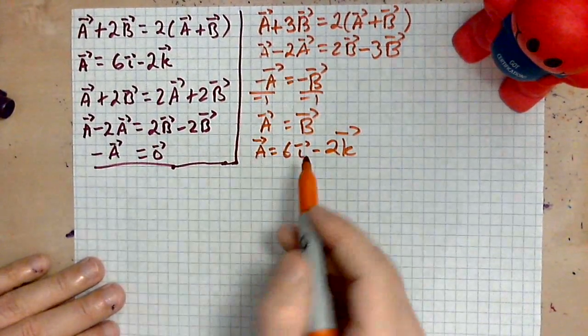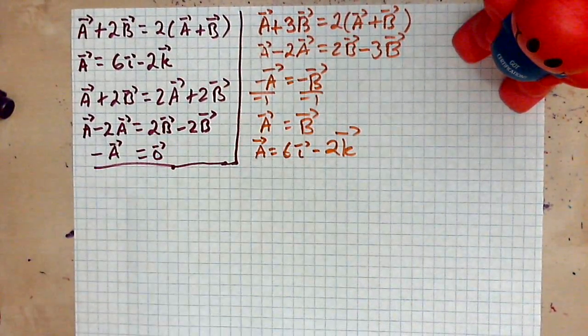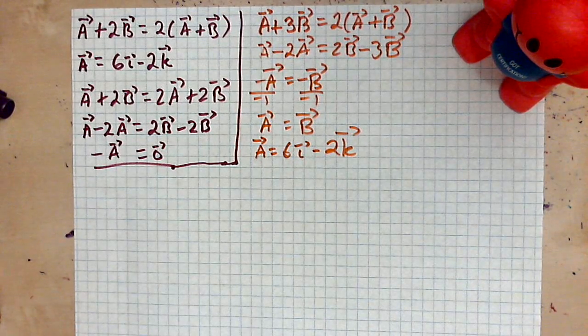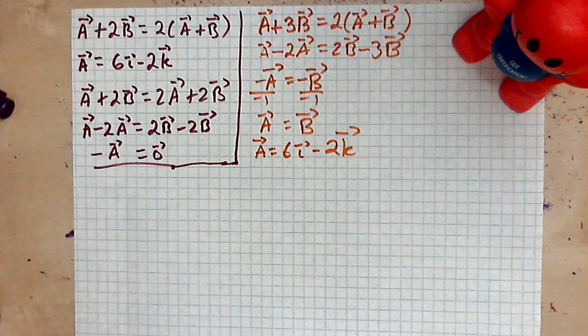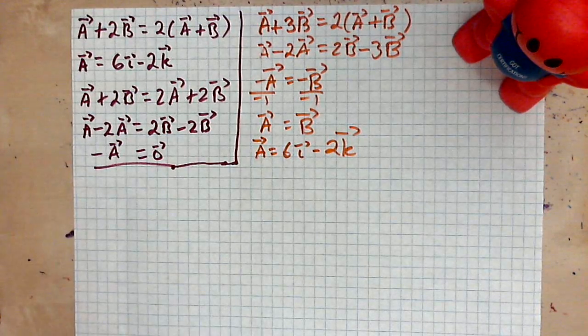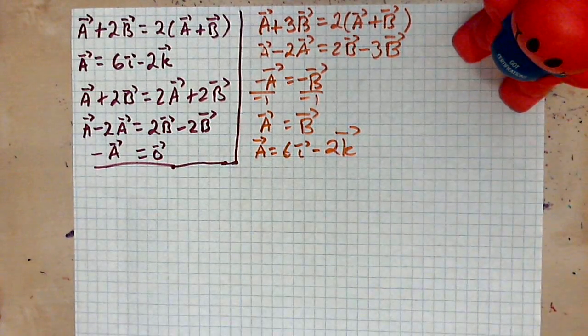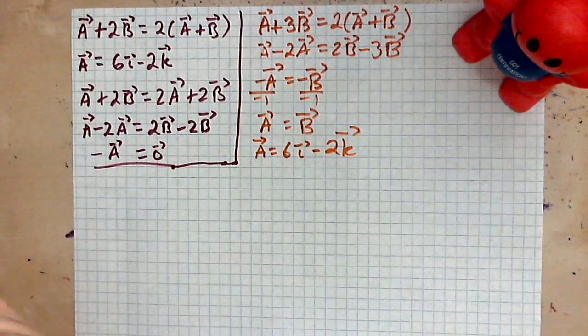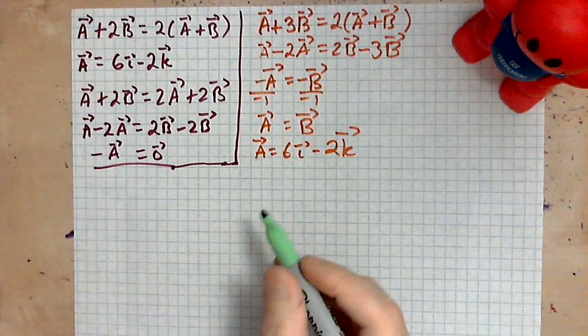So let's take the next step of checking that this is the correct vector that we have found. In other words, a and b have to be equal, so let's take a look.